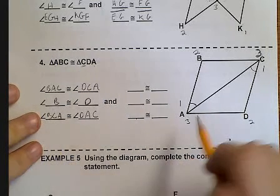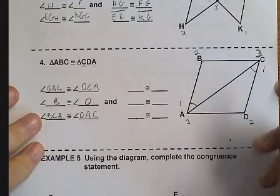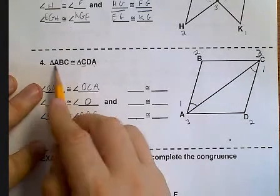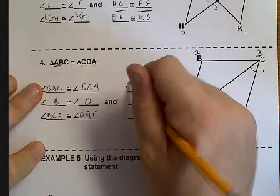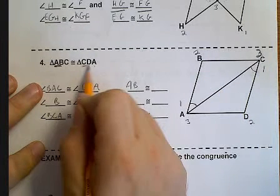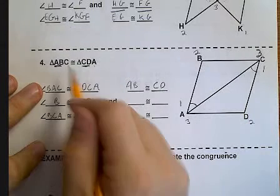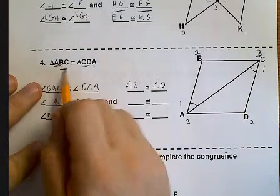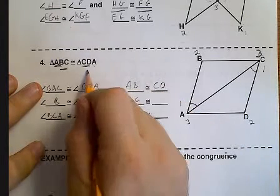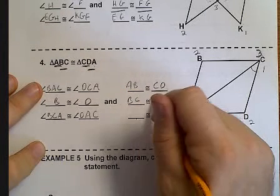Now, I want my congruent sides. Well, the first two are AB. And the first two are CD. And the second two, BC. With the second set, DA.